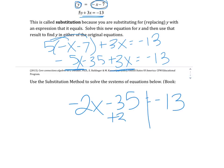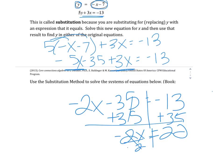Now we'll solve like a regular equation. We're going to add 35 to both sides. So we'll have negative 2X equals 22. And then we'll divide both sides by negative 2 to get X is equal to negative 11.